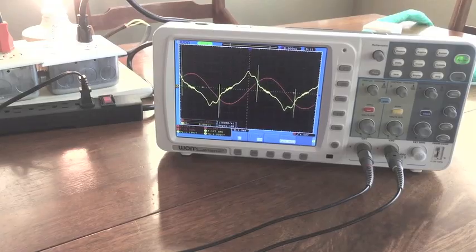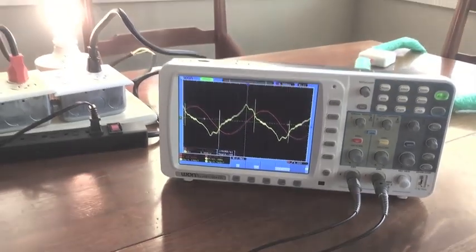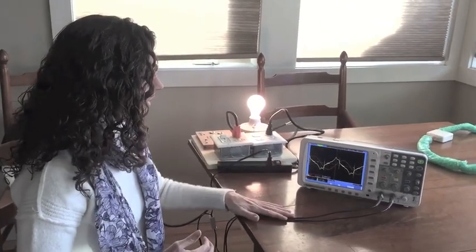That is exactly what it looks like when we run into dimmer switches. So oftentimes I'll be in a client's home and I'll plug in my oscilloscope and I see this right off the bat and I say, you have dimmer switches. Where are your dimmers? Let's find them.